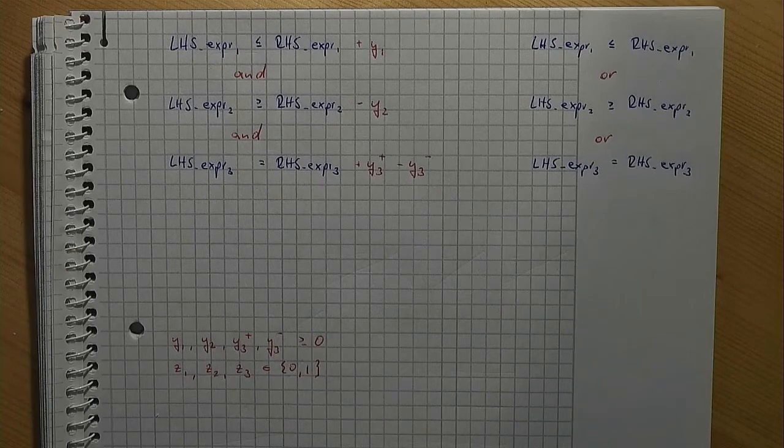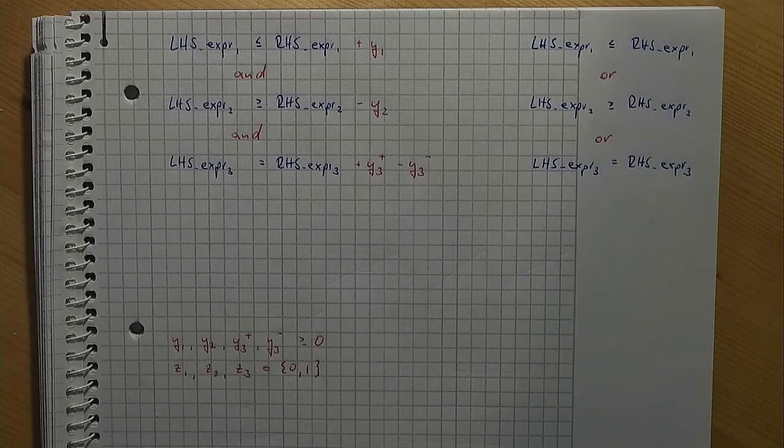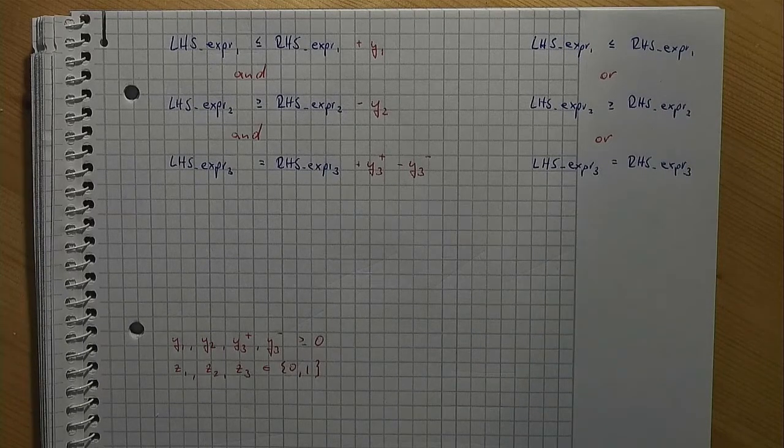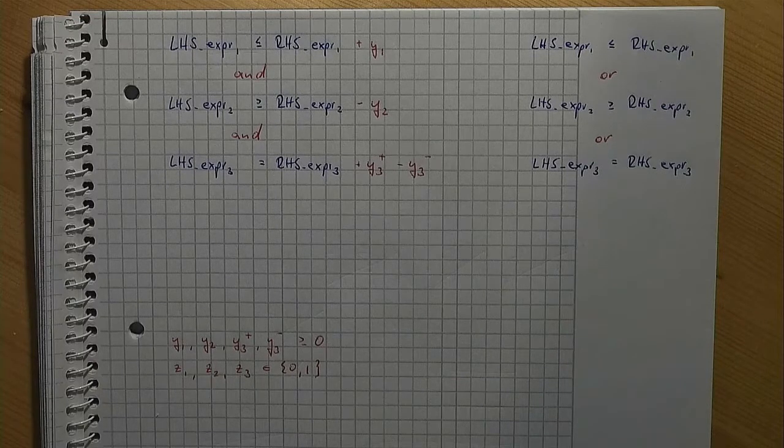For example, z1 equal to 1 should indicate that it is allowed to remove the first constraint, and z1 equal to 0 indicates that the first constraint must be taken into account. The same applies to the other z variables and constraints.